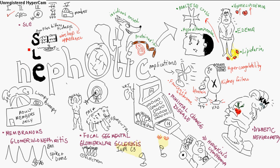Up here in the top left-hand corner, you've got SLE — lupus nephropathy — and there are five distinct histological patterns. Type one is normal, so you just checkmark it — there's nothing wrong there. Type two is a mesangial form, represented by the 'messy angel.'